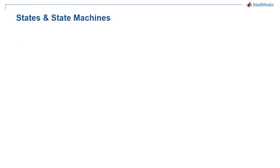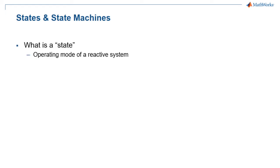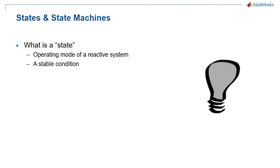So what exactly is a state? A state is an operating mode of a reactive system. Essentially, it is a stable condition of the system. For example, a light has two states: off or on.